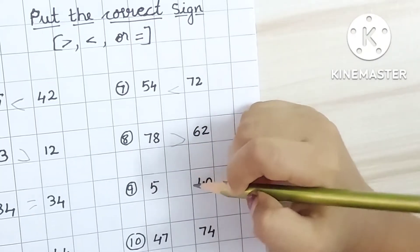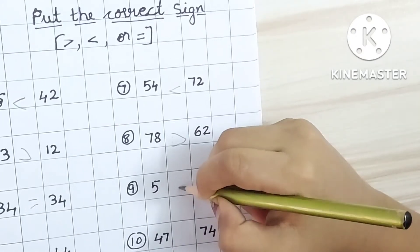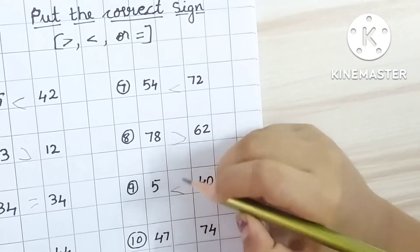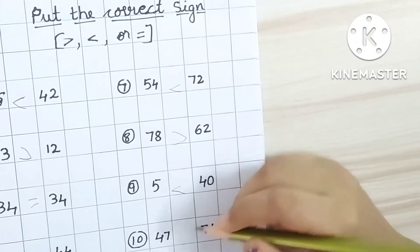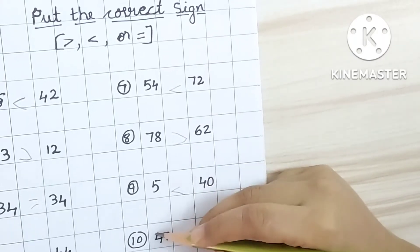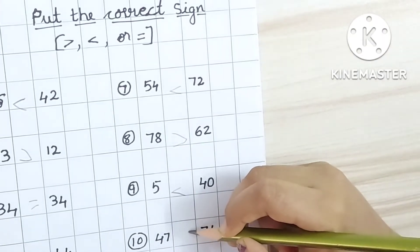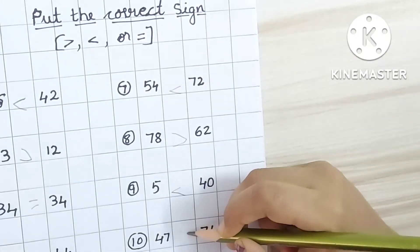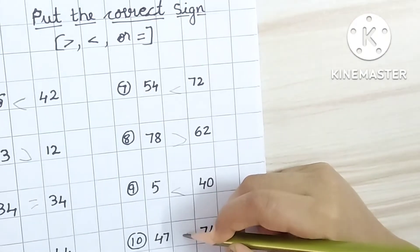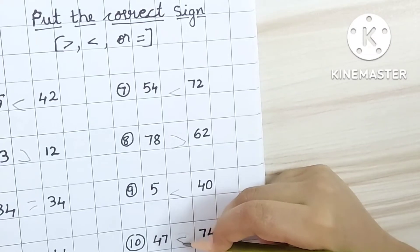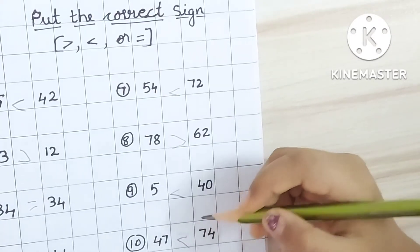Five, forty. Forty. Good. Forty-seven, seventy-four. Forty-seven, forty-seven, seventy-four. Ah, seventy-four is a bigger number. Yes, good.